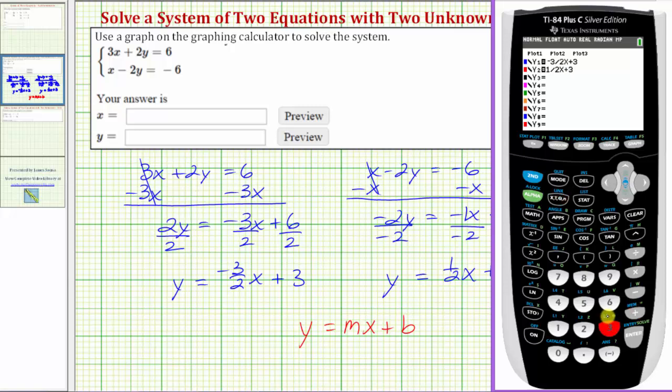To make sure we have the standard window, we can press zoom and then 6 for z standard. So there's a graph of the first line. And there's a graph of the second line. And notice how the two lines do intersect at the vertical intercept, which is the ordered pair (0, 3). But of course, this won't always be the case.